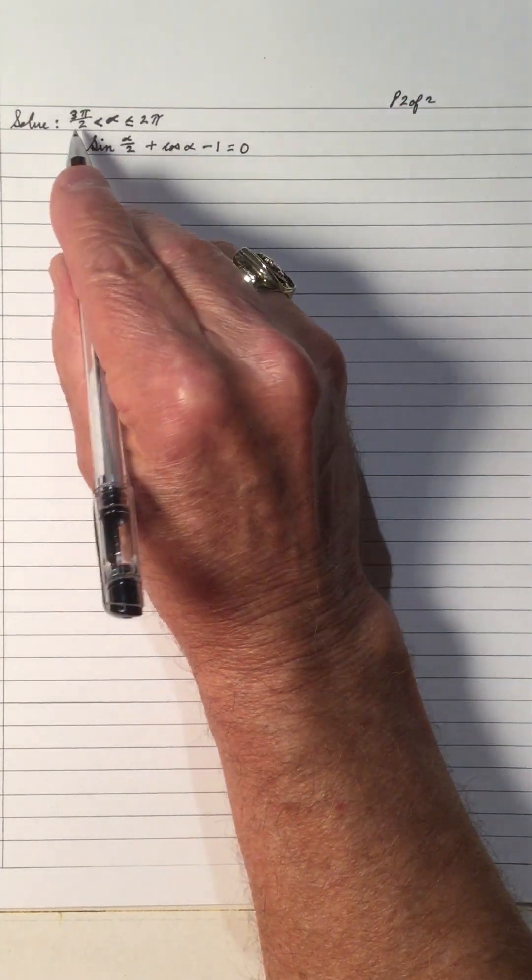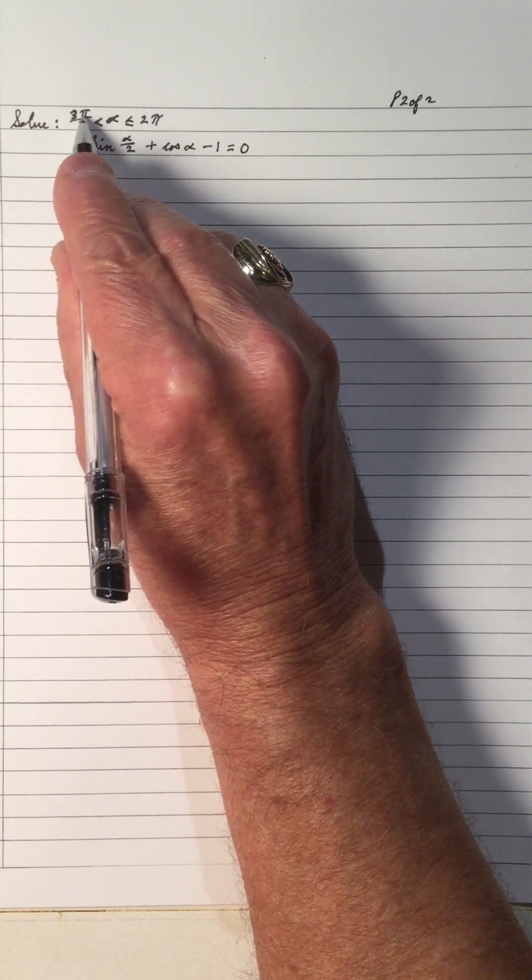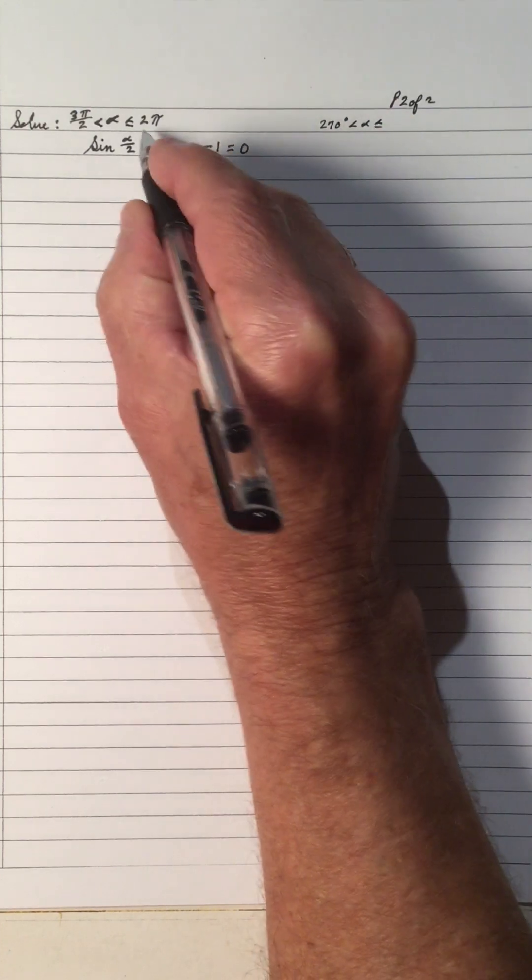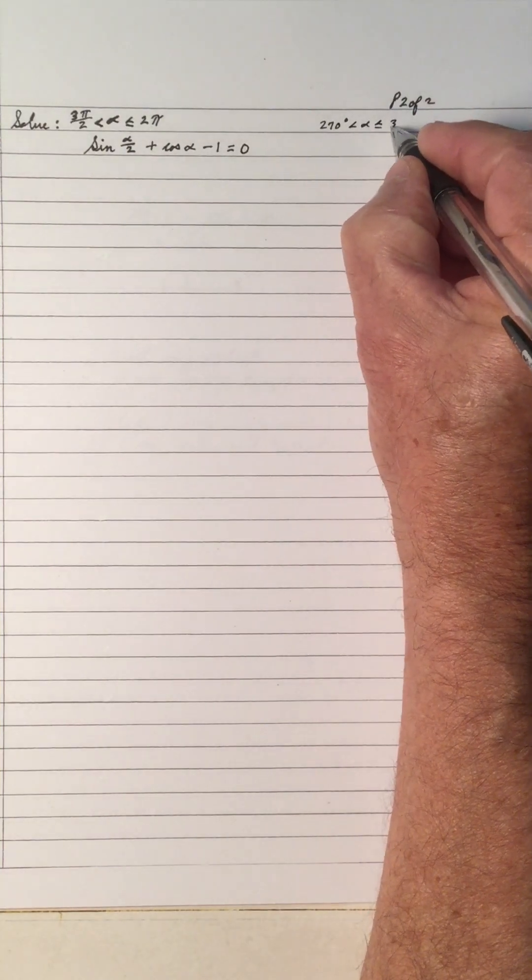Before we start solving, notice this is 3π/2, so that's 90 times 3, which is 270 degrees. π/2 is 90, so 90 times 3 is 270. Less than α, less than or equal to 2π is 360.